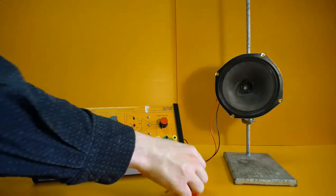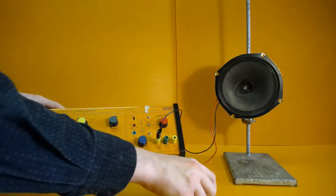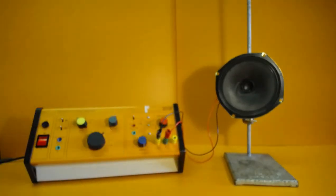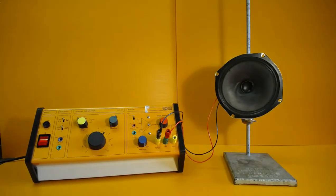So if we connect the loudspeaker up to the signal generator or the amplifier and put a current through it, this alternating current makes the coil and the paper cone move backwards and forwards at the same frequency as the changing current.